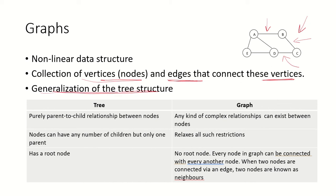Graphs are a generalization of the tree structure. What is the difference between a tree and a graph? In a tree, there is a pure parent-to-child relationship between nodes, but in a graph, any kind of complex relationship can exist. There is no parent-child kind of relationship.